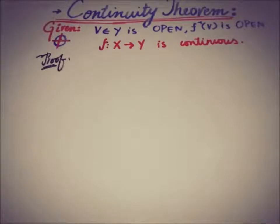The second part of the theorem of continuity, which we have to prove now. The given statement is: if V belongs to Y is open and the inverse image of V, that is f inverse of V, is open in X, then what we have to prove is that the function from X to Y is continuous.